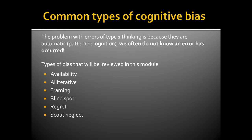The problem with errors of Type 1 thinking is that because they are automatic, we often do not know an error has occurred. There are a large number of cognitive biases that are relevant to medicine and radiology.